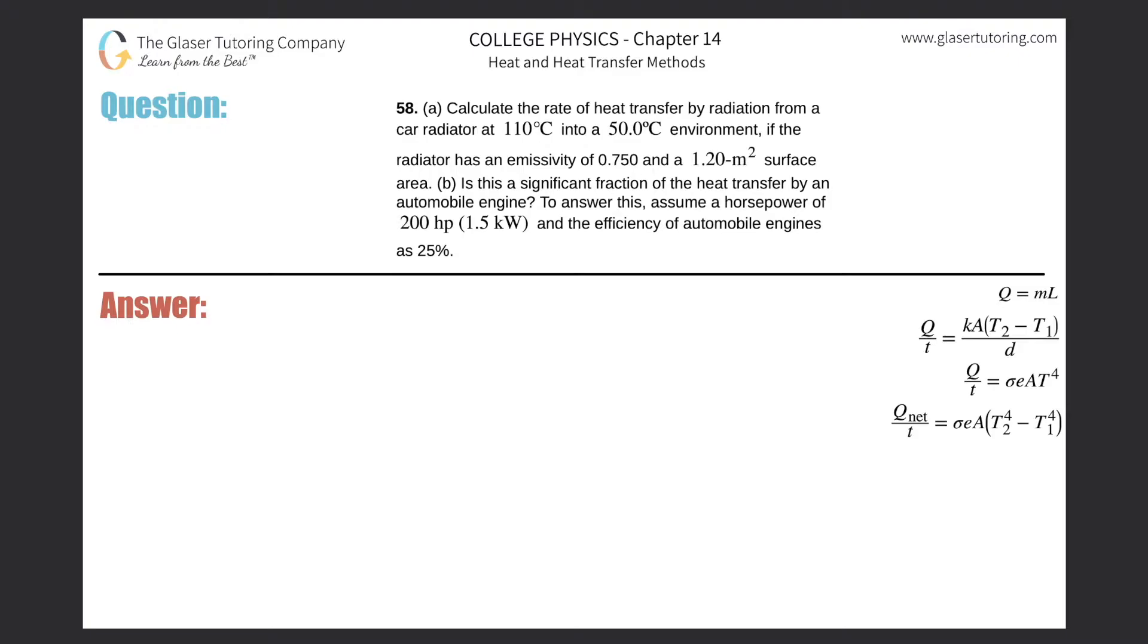Number 58, letter A: Calculate the rate of heat transfer by radiation from a car radiator at 110°C into a 50°C environment if the radiator has an emissivity of 0.75 and a 1.2 square meter surface area.